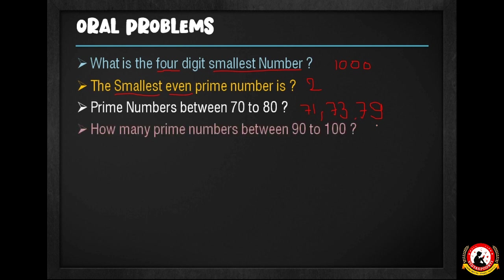How many prime numbers are between 90 and 100? There is only 1 prime number between 90 and 100. That prime number is 97. So 97 is the one prime number between 90 and 100. Very good!